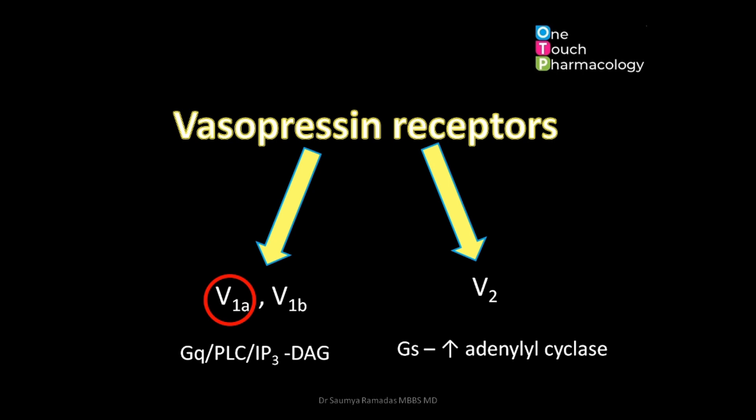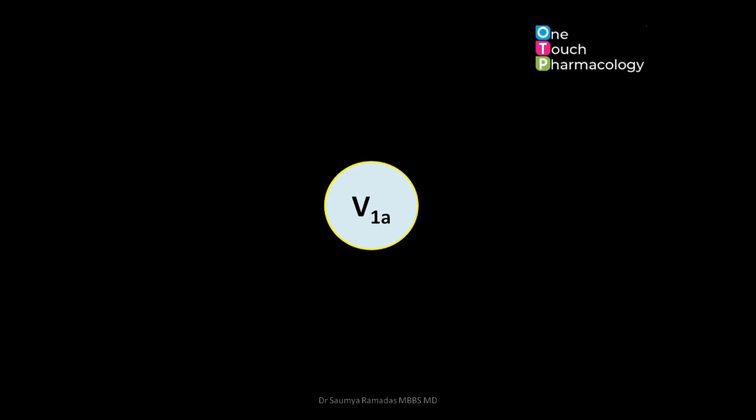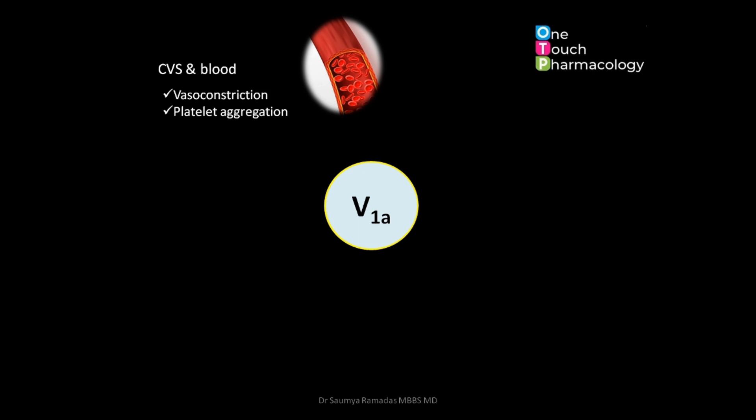Out of these receptors, the most abundant one is the V1a type. Initially, the V1b receptors were classified as V3 type receptors, but now they are classified under V1 receptors. The V1a receptors are abundantly present in the cardiovascular system, where they are mainly responsible for causing vasoconstriction and platelet aggregation.